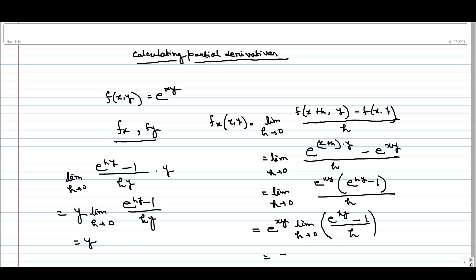So we get e^(xy) times y, that is y times e^(xy). This is the partial derivative of this function with respect to x.